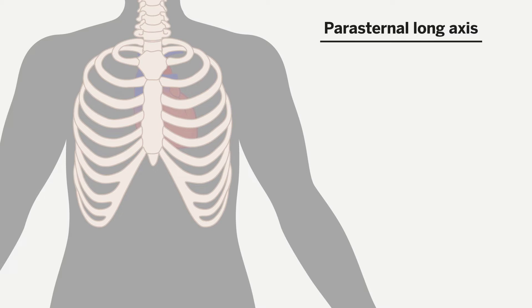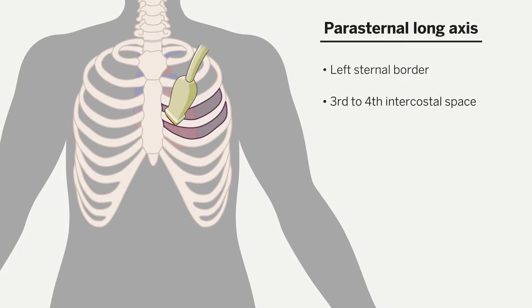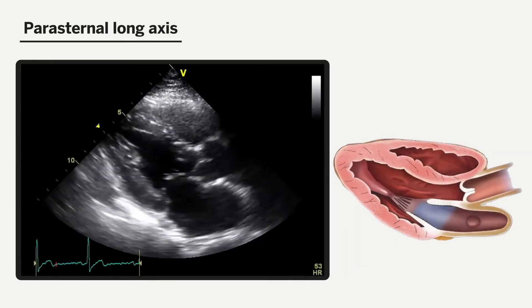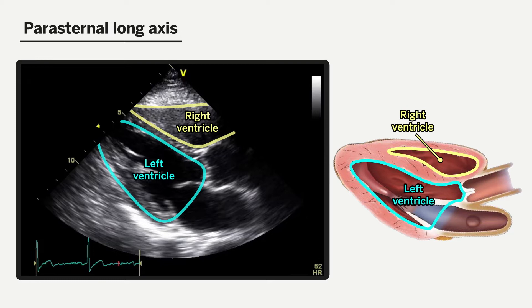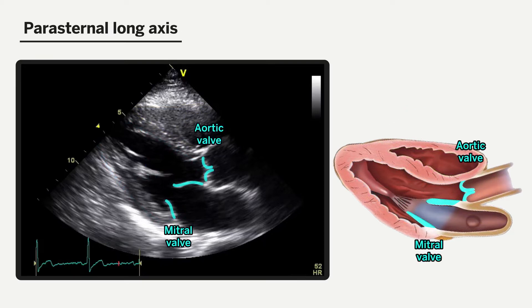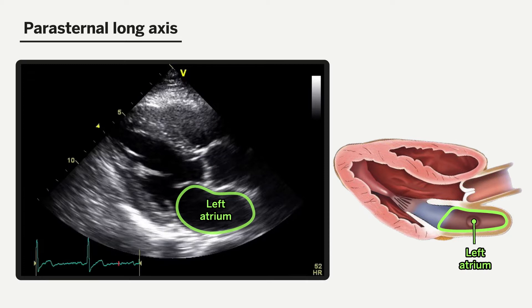The parasternal long axis is often the first view we obtain in cardiac point-of-care ultrasound. To obtain this view, we place the probe at the left sternal border in the third to fourth intercostal space, with the probe indicator orientated towards the patient's right shoulder, as indicated by the blue arrow in the diagram. Our standard view should show the right and left ventricle, the mitral and aortic valves, the left atrium, a portion of the ascending aorta, and the descending aorta at the lower portion of the screen.